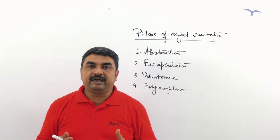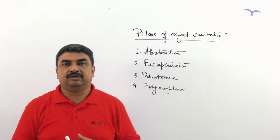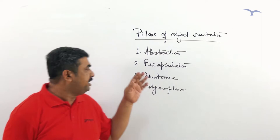The entire concept of object orientation stands on four pillars. Whichever technology implements these four pillars, they are termed as object-oriented technologies. Those four pillars are abstraction, encapsulation, inheritance and polymorphism.